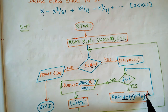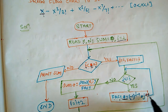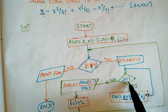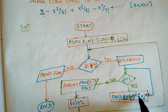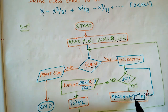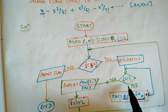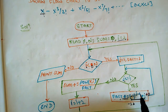When j = 2: (-1) to the power (2-1) = (-1)^1 = negative 1. So fact = 1 × (-1) × 2 = -2. Then j becomes 3. When j = 3: (-1) to the power (3-1) = (-1)^2 = positive 1. So fact = -2 × 1 × 3 = -6. The factorial carries the alternating sign embedded within it.